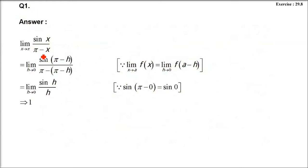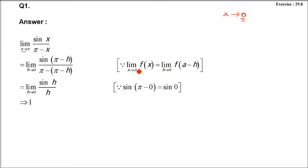Question number 1: sin x divided by (π minus x), limit x tends to π. We had a discussion in theory about when x is not tending to 0 but tending to some number or value — a non-zero limit. So we have to use the trigonometric identity and also the theory of limits.